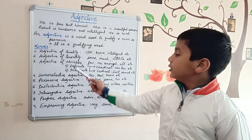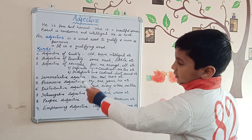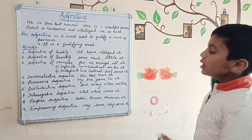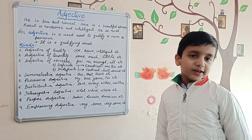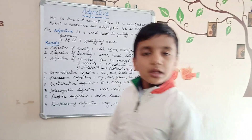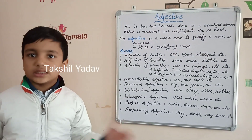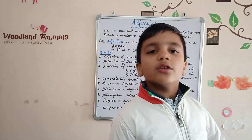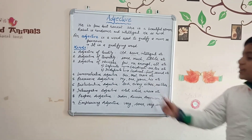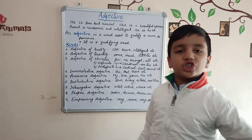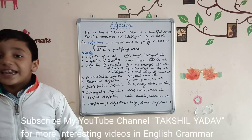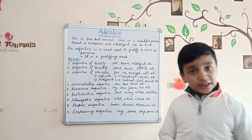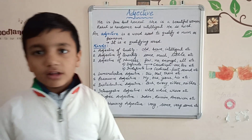If we go even further, definite adjectives of number are divided into two types: cardinal and ordinal. Cardinal numbers are simple numbers — for example: one, two, three. And ordinal numbers tell us about the position at which they stand — for example: first, second, third, fifteenth, fourteenth, nineteenth, hundredth, etc.